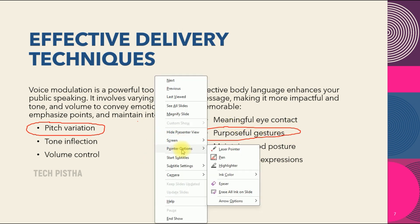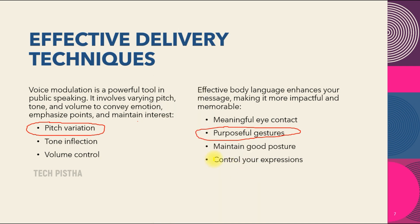Another option is to go to the pointer option and then select the highlighter. With the highlighter you can highlight text using a shade effect. This helps maintain audience interest in that section. You can use highlighting with this option.